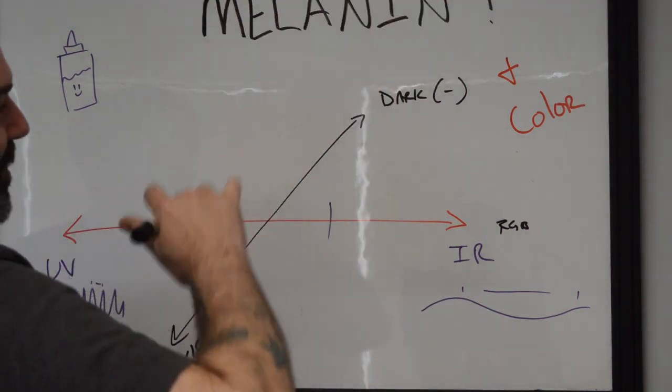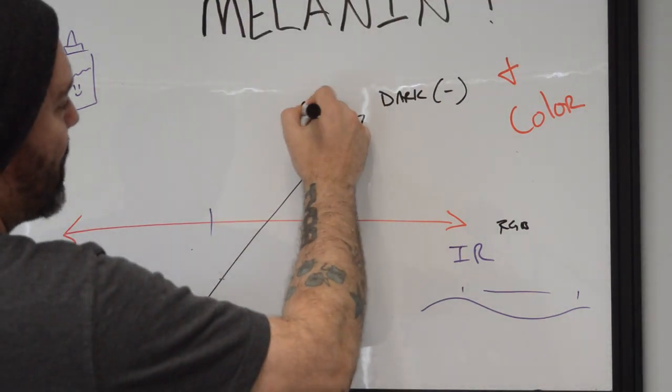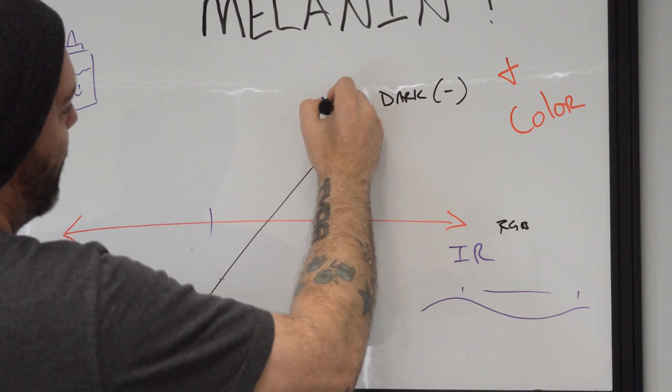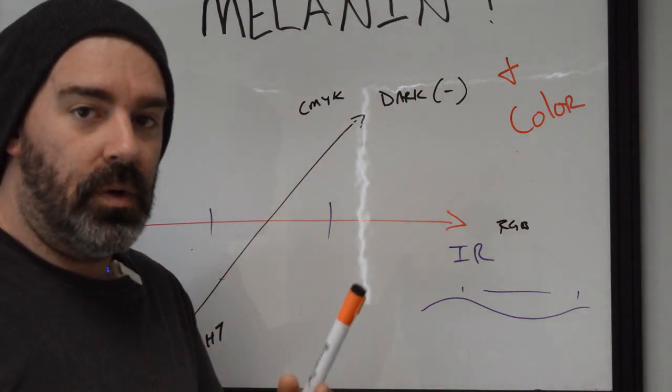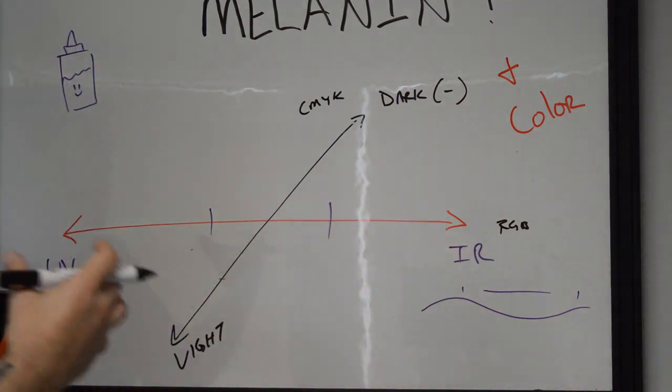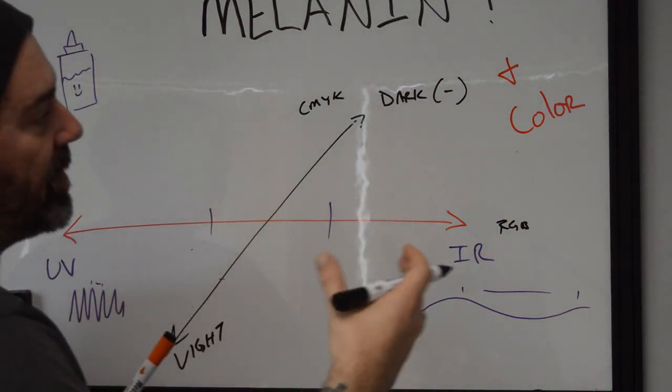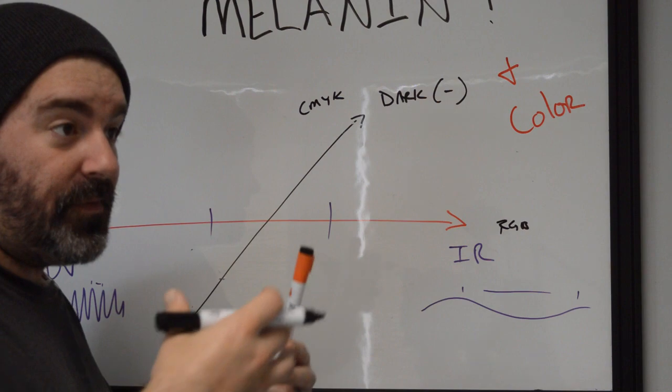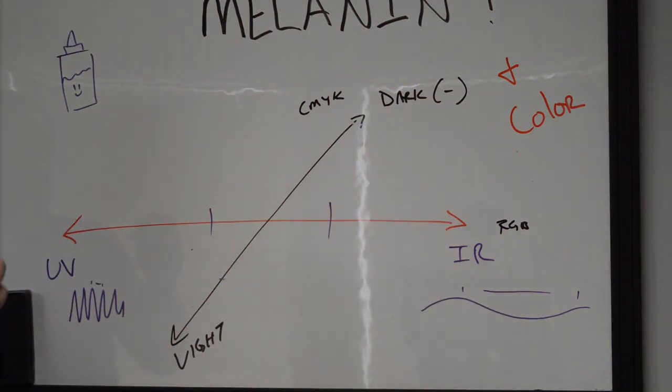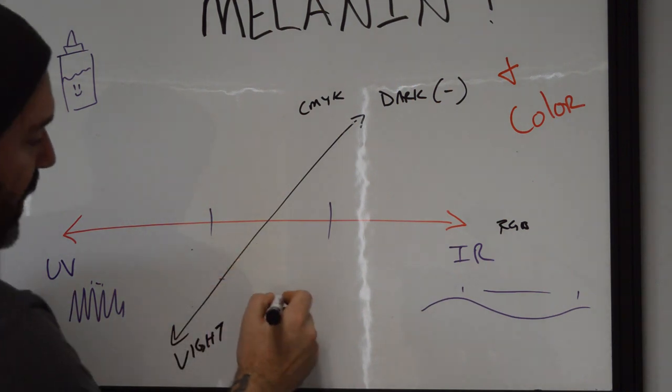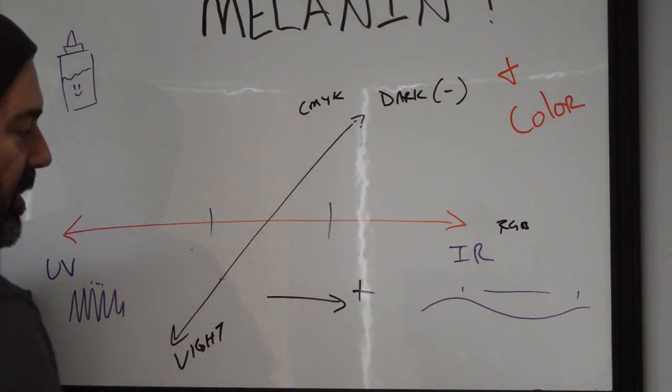When we start moving it into this other spectrum, we're going to be getting into our CMYK profiles where it's not just like I have a true blue. Now I can have a light or a dark blue based on how much of the energy expressed of that blue is being added or removed.